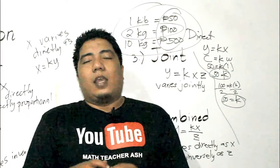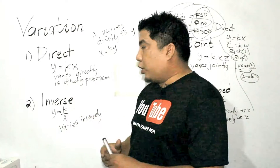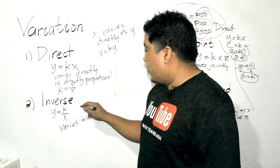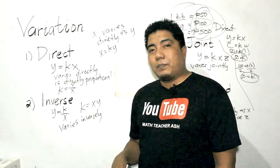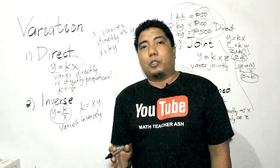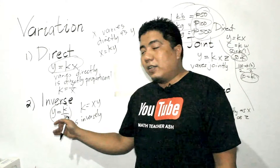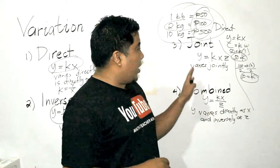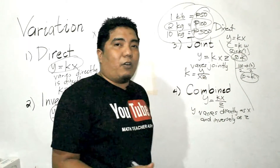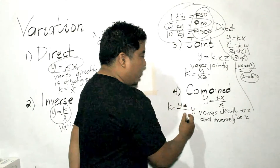The method to solve for k depends on the type of variation. For direct variation, k = y divided by x. For inverse variation, k = x times y. For joint variation, k = y divided by the product of x and z. For combined variation, k = y times z divided by x. Separate videos will cover how to solve k and work through word problems for each variation type.